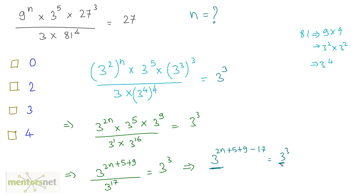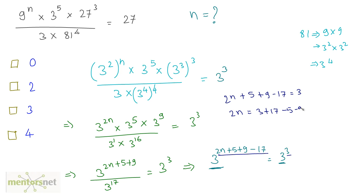Since the bases are the same, I can write 2n plus 5 plus 9 minus 17 equals 3. Therefore 2n equals 3 plus 17 minus 5 minus 9, and 3 plus 17 is 20, minus 14 gives 6. So 2n equals 6, therefore n equals 6 by 2, which is 3.